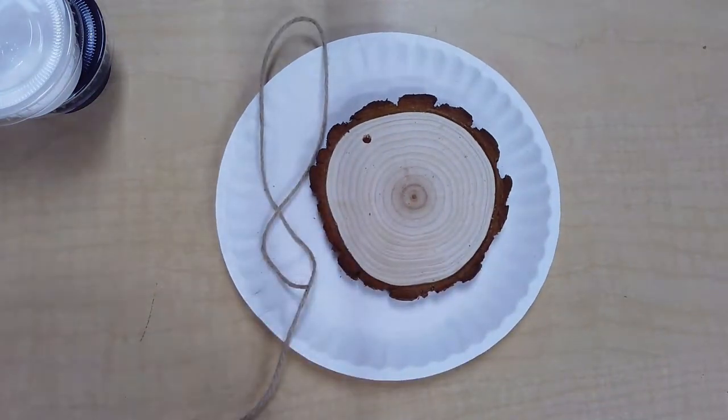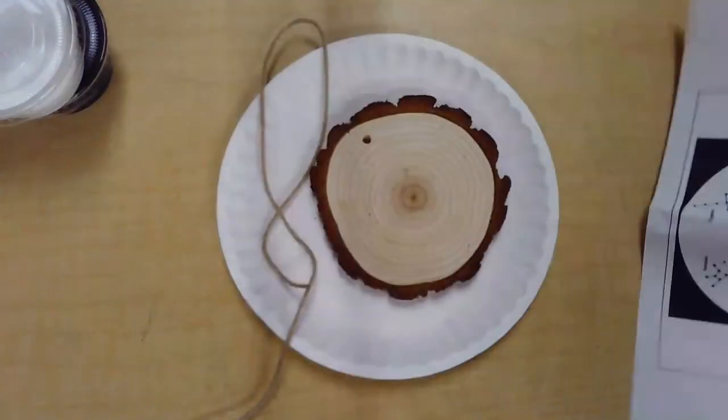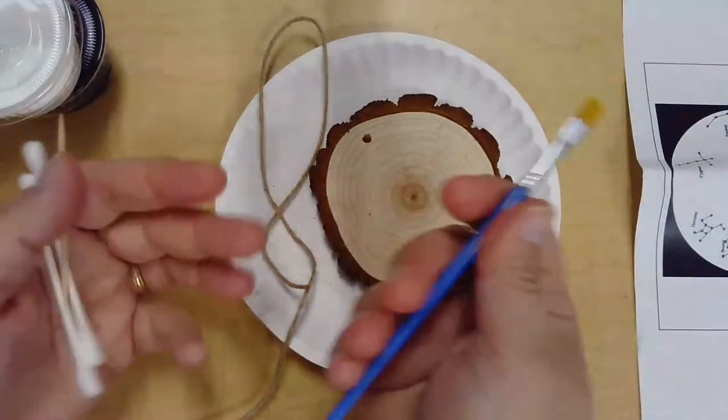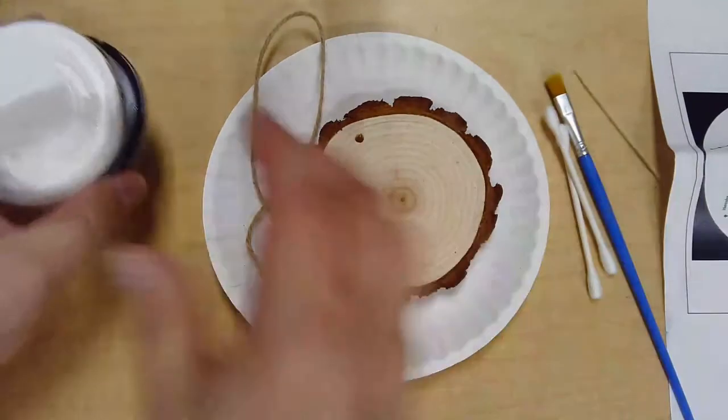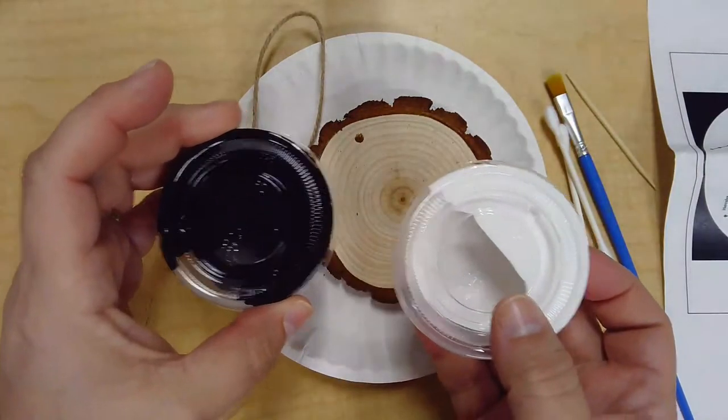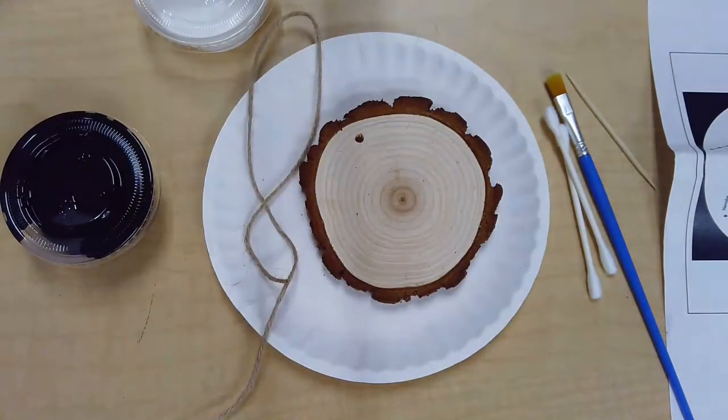In this kit you'll find your slice of wood with a pre-drilled hole, a chart with some constellations, your paintbrush, some q-tips and a toothpick, and you should have some leftover white and black paint from painting your elephant.